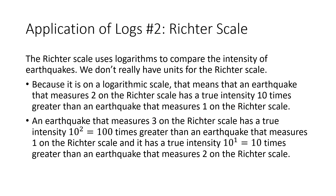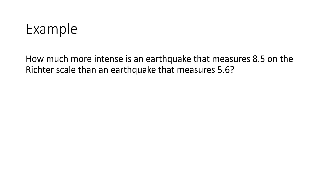An earthquake that measures 3 has a true intensity 10 squared, equals 100 times greater than an earthquake that measures 1 on the Richter scale, and has a true intensity 10 to the 1 times greater than an earthquake measuring 2. So in other words, you're subtracting the scores and that's your exponent on the base of 10.